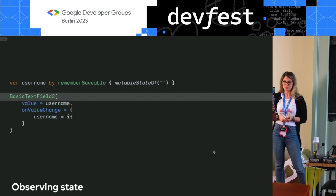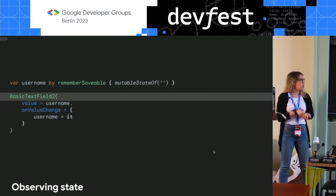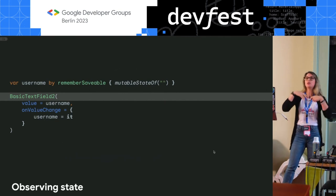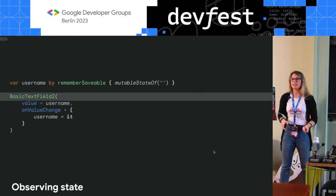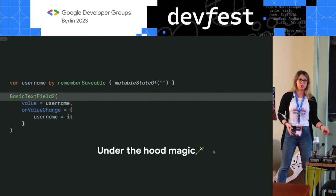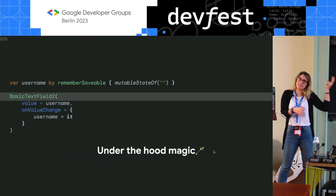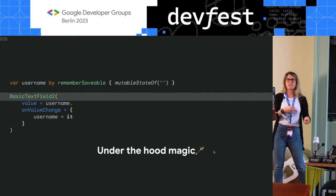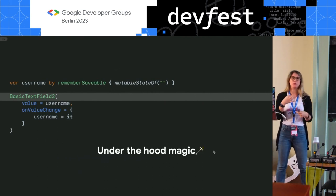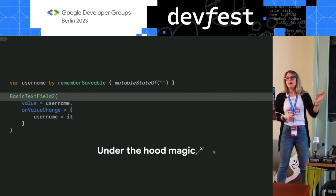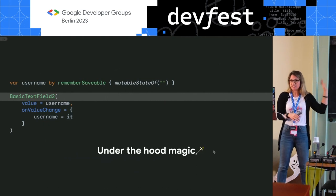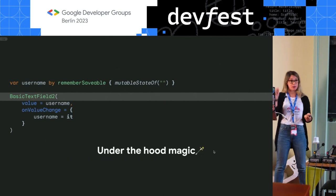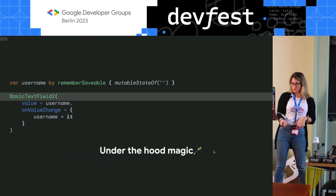For example, you can define a suspend function validate username, and for each new character typed, run the asynchronous validation and set the value of username has error. On the Compose side, create a launched effect to observe the typing events, and then just observe username has error to show the error label or not. A final note: the original API shape with value and on value change was so popular that the team created the same version for basic text field 2 — and under the hood they made changes so the asynchronous issues no longer happen.